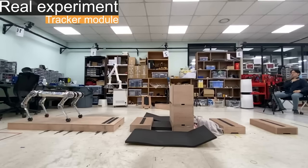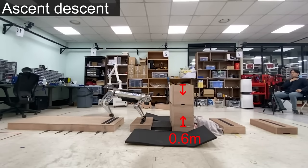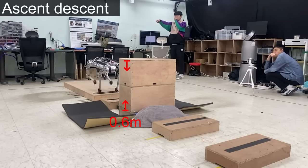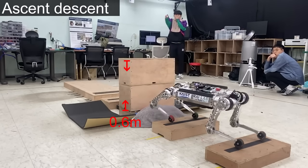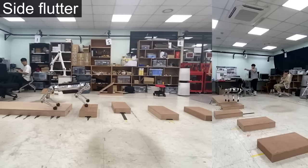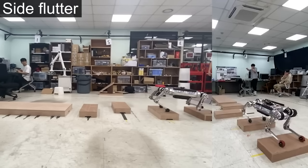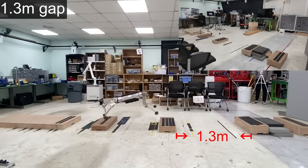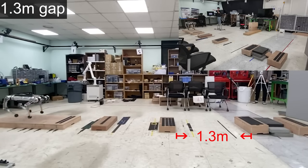This experiment demonstrates the powerful performance of the tracker module: a map requiring ascent and descent of a 0.6-meter obstacle, a map requiring side flutter, and a map requiring jumps across gaps up to 1.3 meters wide.